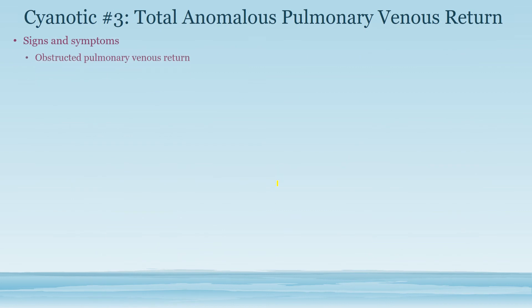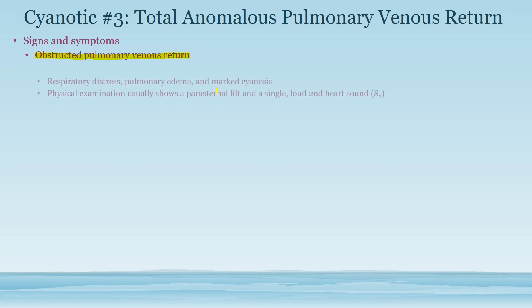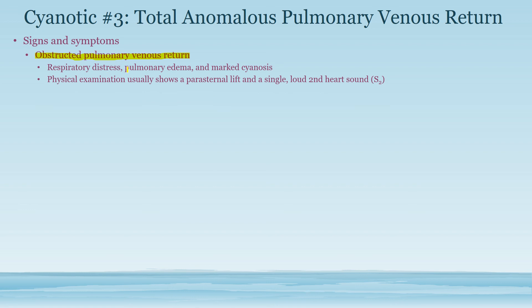Now let's talk about signs and symptoms of total anomalous pulmonary venous return. In the obstructed form, blockage of pulmonary vein flow causes backup of blood into the lungs, pulmonary arteries, and pulmonary capillaries. As a result of this backup of blood and fluid, you get respiratory distress, pulmonary edema, and cyanosis.